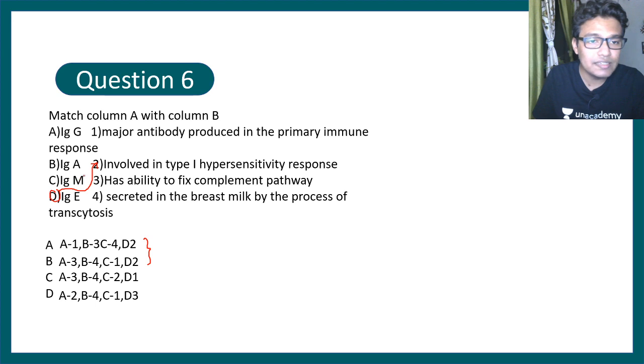Here is IgM. In the primary or secondary immune response, the first thing that comes up is IgM. So C equals 1 and you have to see where C equals 1. C equals 1 in the second option, so B would be the correct option.